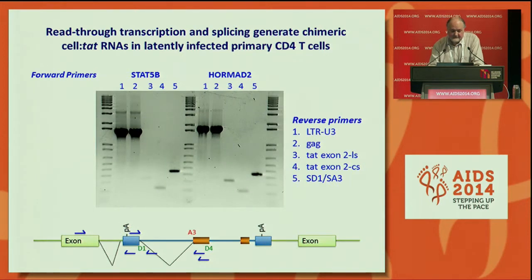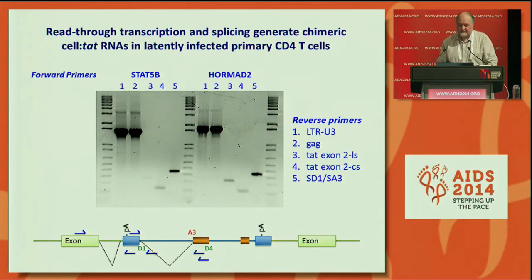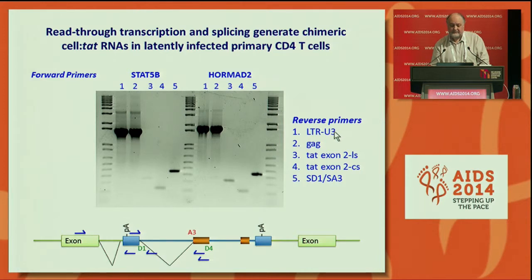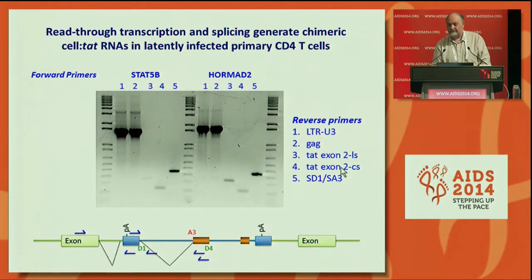Analysing these further, and in a similar way to the ACH2 cells shown before, we find read-through transcription with evidence of the LTR U3 sequence, GAG sequence — as shown by the series of primers used to derive these bands — and we can see the TAT exon 2 non-coding leader sequence, the TAT exon 2 coding sequence, as well as splicing between splice donor 1 and splice acceptor 3.